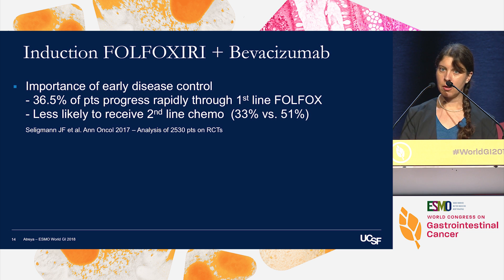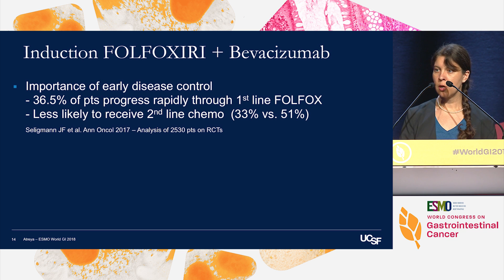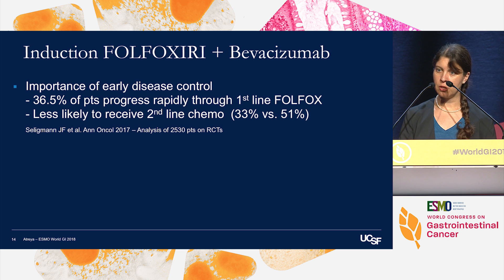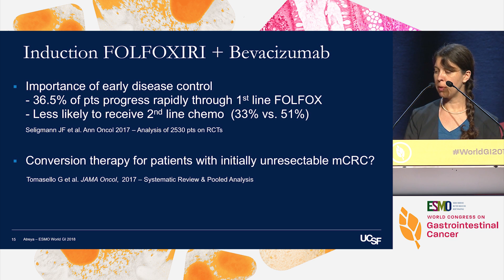About a third of patients with BRAF V600E mutations progress rapidly through first-line FOLFOX. In an analysis of a large series of clinical trial patients, only about a third of patients with BRAF V600E mutations went on to receive second-line chemotherapy, compared to about half of patients without a BRAF mutation. FOLFOXIRI is also sometimes considered as conversion therapy for patients with initially unresectable colorectal cancer.